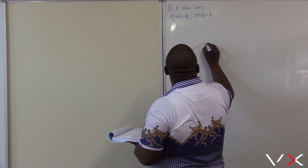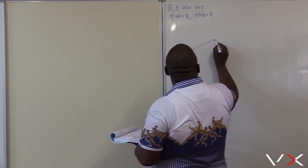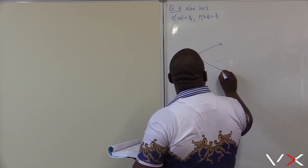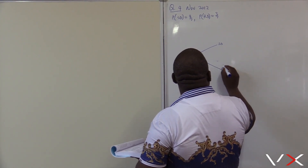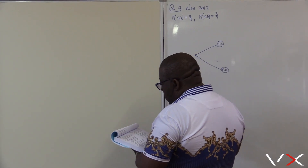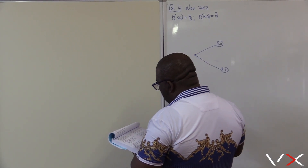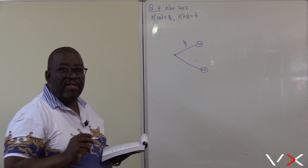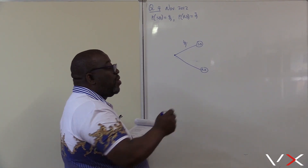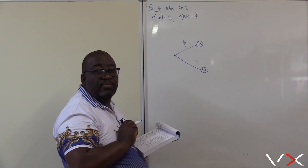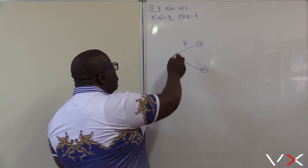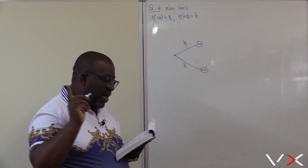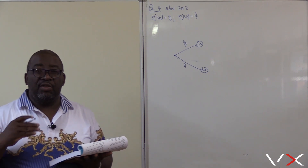The probability of a sunny day is 4 over 7. Once they say 4 over 7, they didn't have to give me the probability of a rainy day, because when I add these two branches I must get 1. So the only way I'll be getting 1 is if I have 3 over 7. And the probability of a rainy day is 3 over 7 — so it is correct.